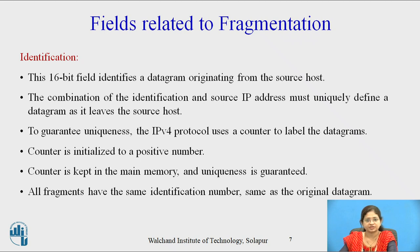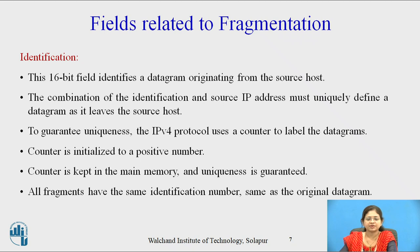Let's see identification first. This 16-bit field identifies a datagram originating from the source host. The combination of the identification and source IP address must uniquely define a datagram as it leaves the source host. To guarantee uniqueness, the IPv4 protocol uses a counter to label the datagram. The counter is initialized to a positive number, kept in main memory, and uniqueness is guaranteed. All fragments have the same identification number as the original datagram.